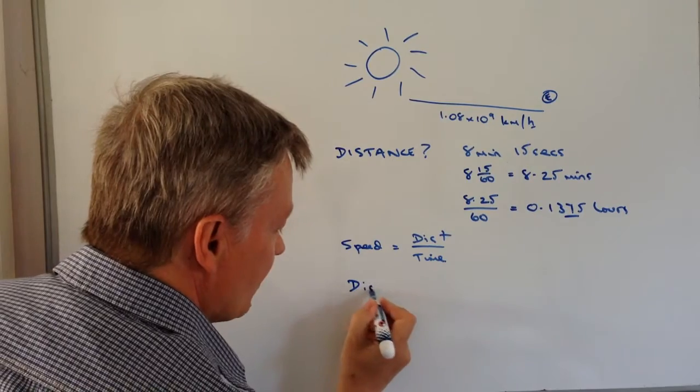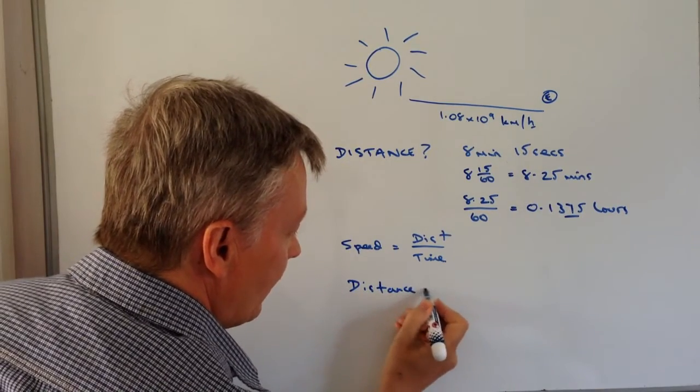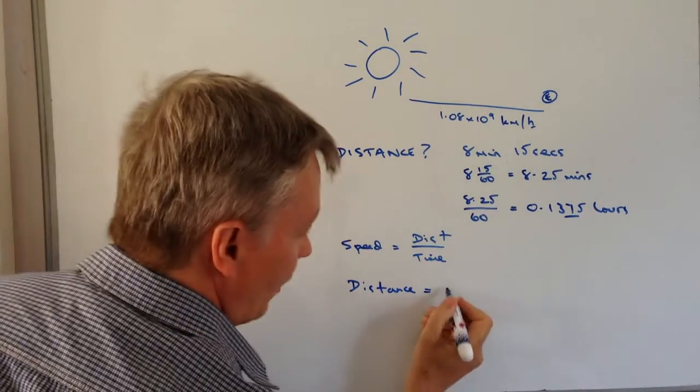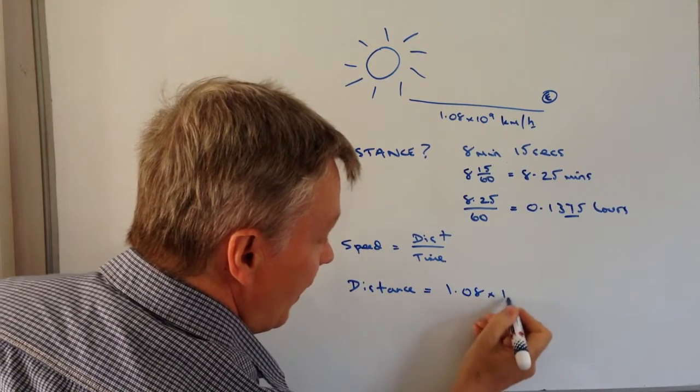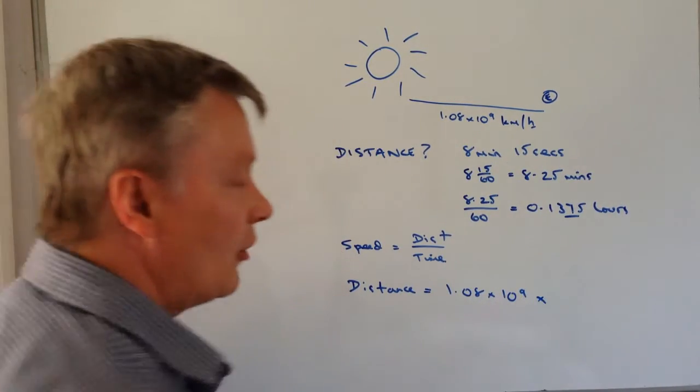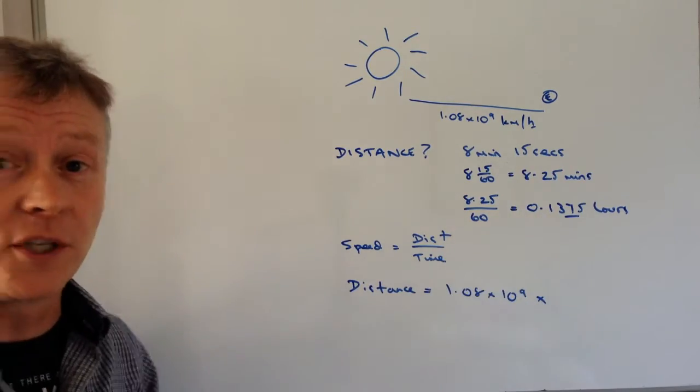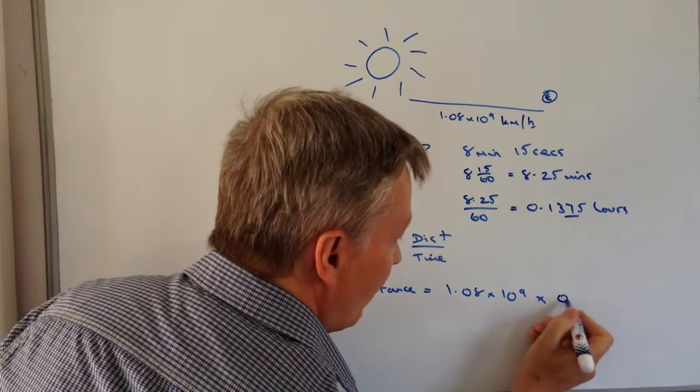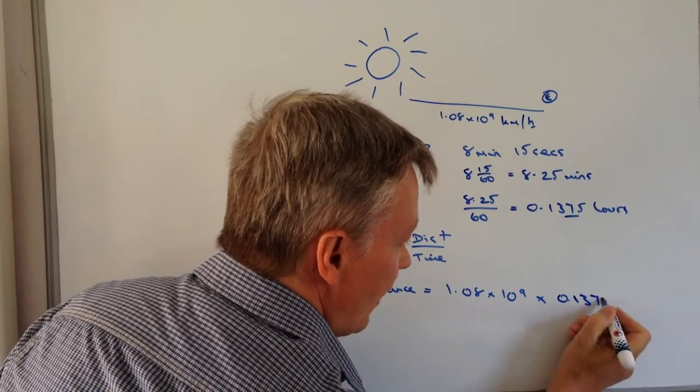So the distance is going to be the speed, which is 1.08 times 10 to the power of 9, and now we've got the time in hours, we just multiply through by 0.1375.